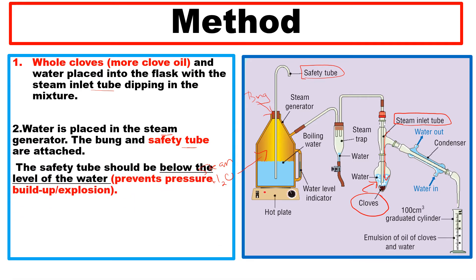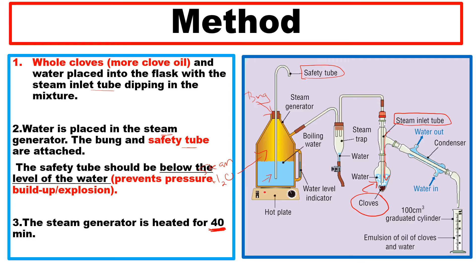The safety tube should be below the level of the water, which prevents pressure build-up or an explosion. The steam generator is then heated for about 40 minutes.